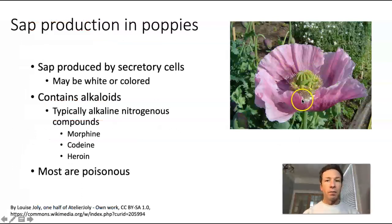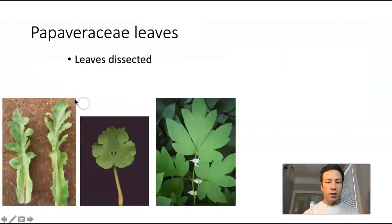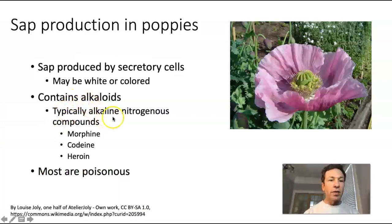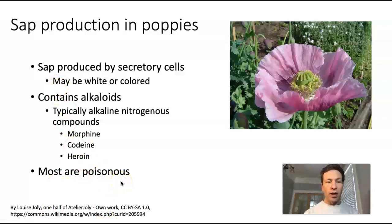Poppies tend to produce sap from secretory cells, and the sap may be either white, clear, or colored. The sap typically contains alkaloids — nitrogenous compounds that tend to be alkaline or basic in pH. Some of the alkaloids we're more familiar with include morphine, codeine, and heroin. Nicotine is also an alkaloid. Because of these alkaloids in poppies, most poppies are poisonous. There are some exceptions — I have read that the California poppy is not toxic, although I have not tested that and do not encourage you to try consuming it.